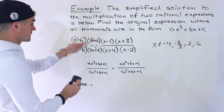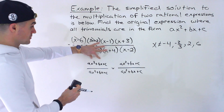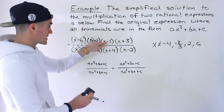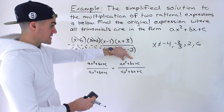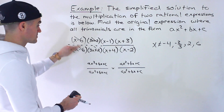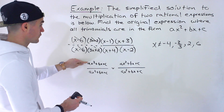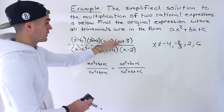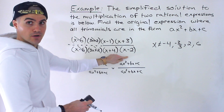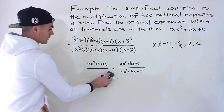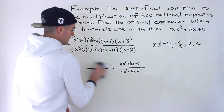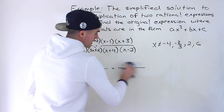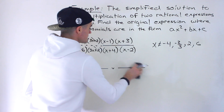For example, you could do x minus 6 times 3x plus 2 over x minus 1 times x plus 3, or you could do x minus 6 over x minus 1 multiplied by 3x plus 2 over x plus 3. It doesn't really matter — hence why there are multiple ways to organize it.